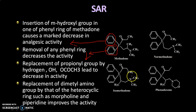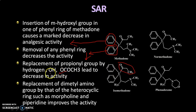People also tried to replace the propionyl side chain — substituting the propionyl group with different kinds of esters, or with a hydroxyl group, or even with hydrogen — but all of these substitutions also resulted in a decrease in activity.